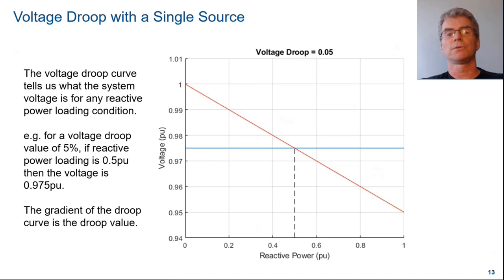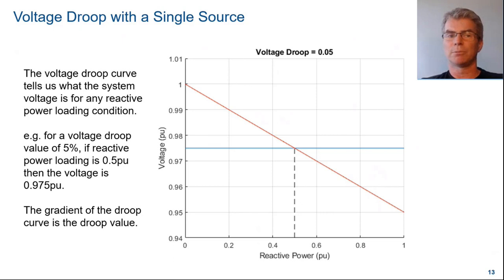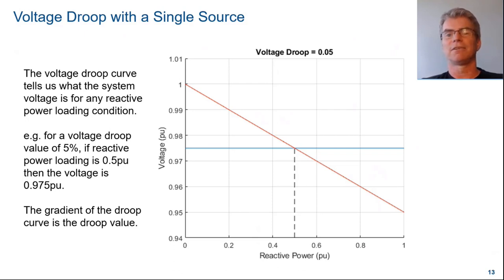The voltage droop curve tells us what the system voltage is for any reactive power loading condition. For example, for a voltage droop of 5%, if reactive power loading is 0.5 per unit, then the voltage is 0.975 per unit. Again, the gradient of the droop curve is the droop value.